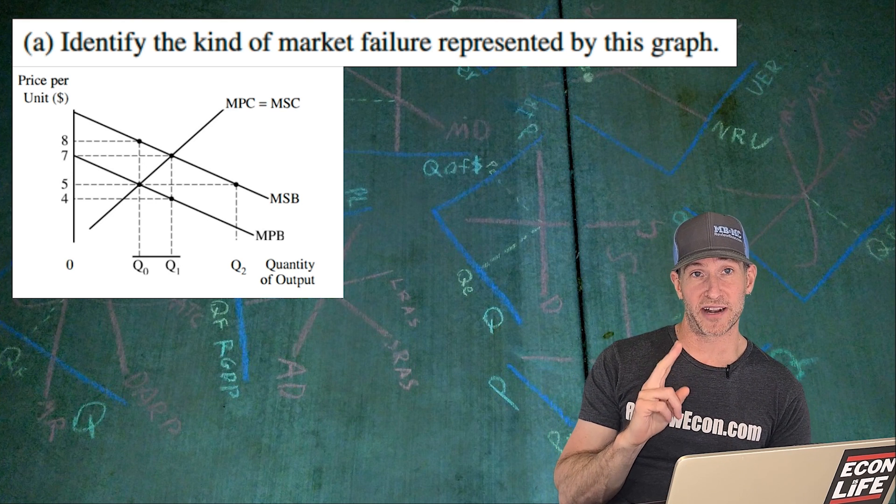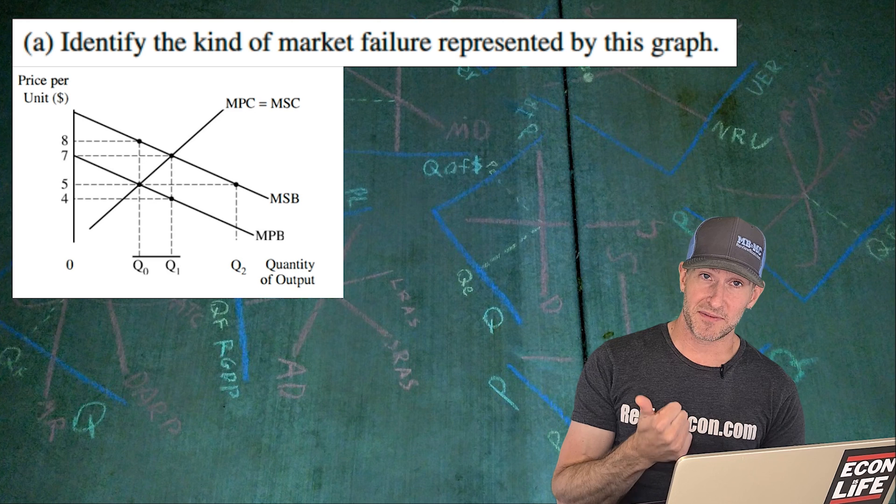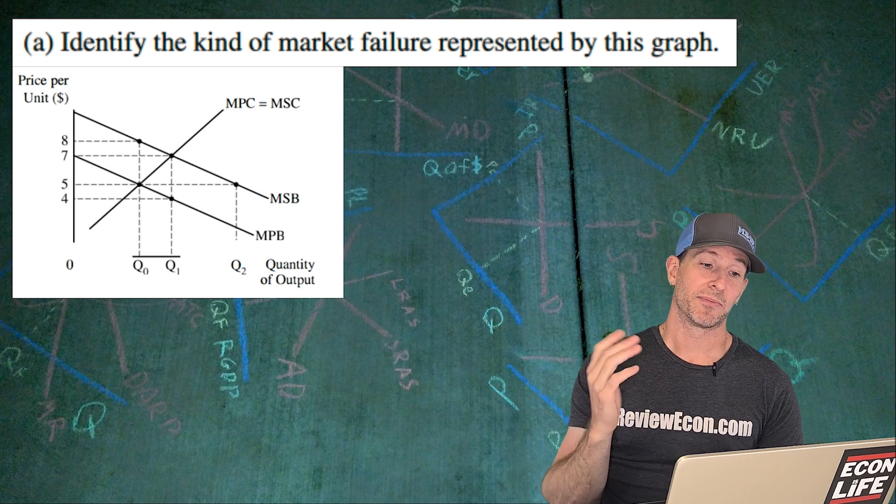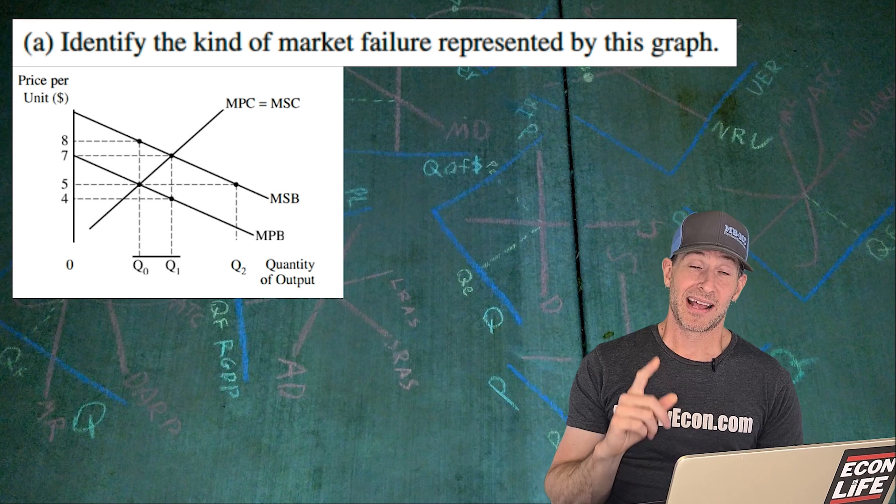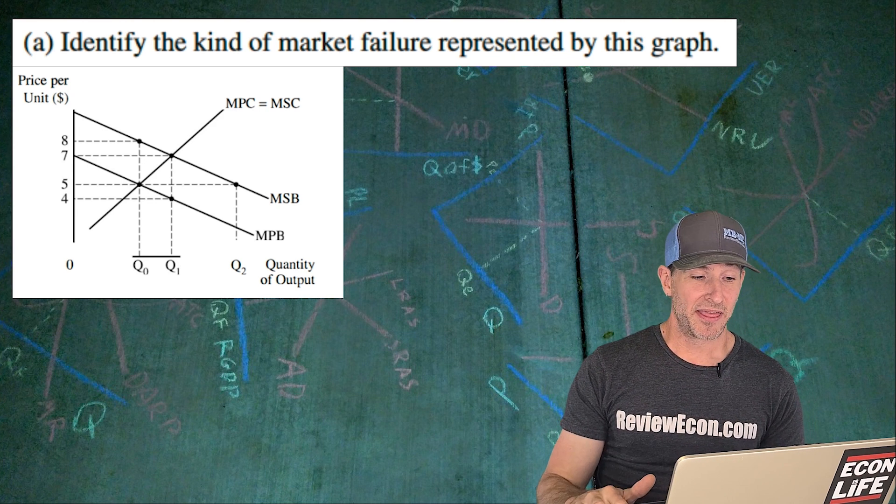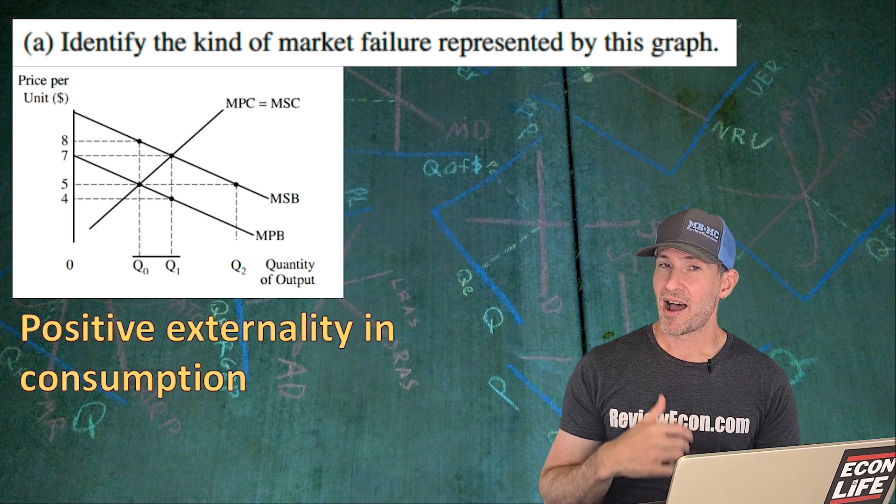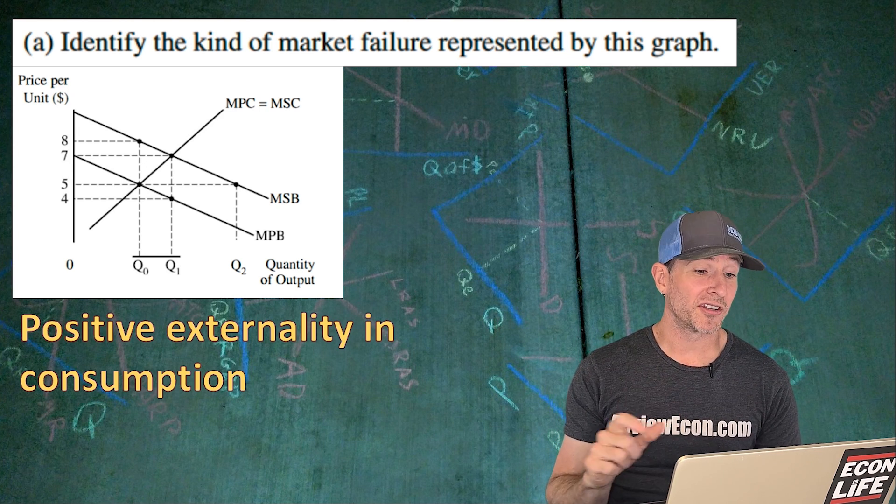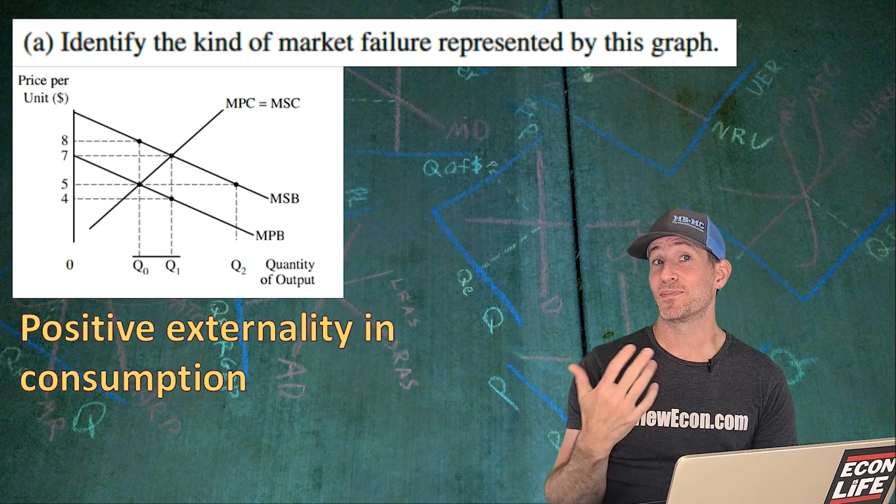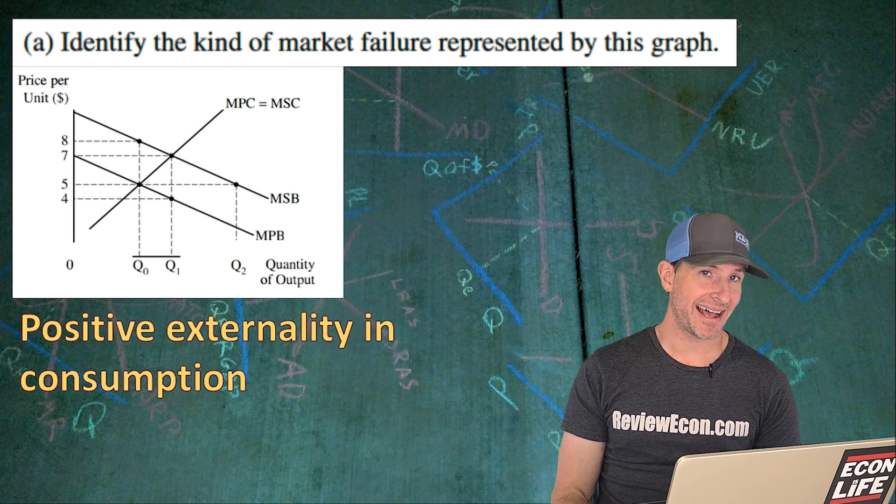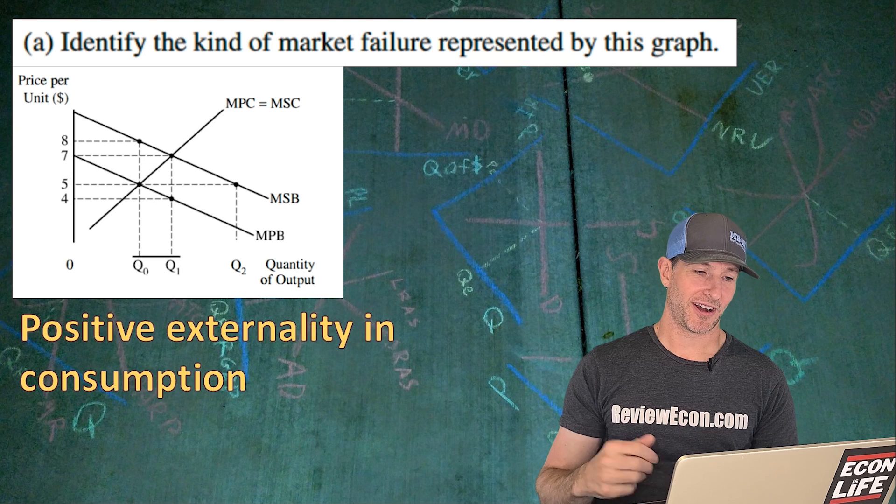As you can see, we have two marginal benefit curves. We have the marginal private benefit and a marginal social benefit that is greater than the marginal social benefit. Since it's on the demand curve or downward sloping side, this is a positive externality in consumption. I don't know if they're going to require you to say in consumption. I hope not. They have not required those sorts of distinctions in the past. But we'll see what they do.